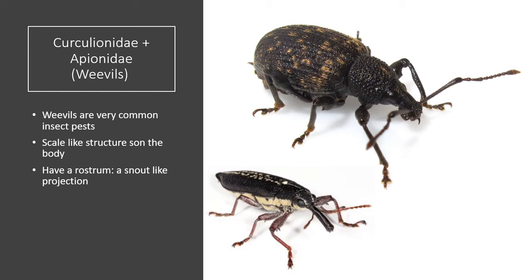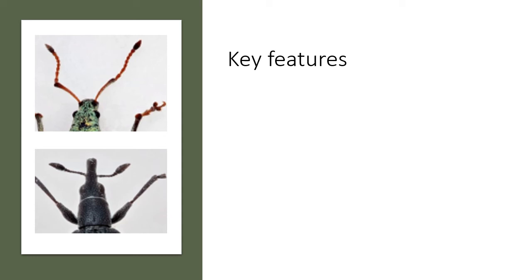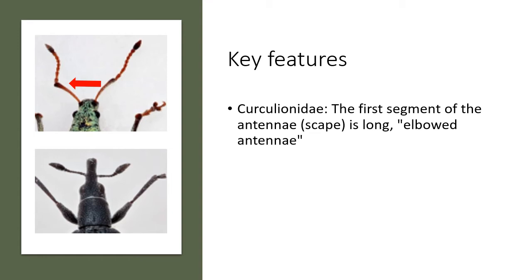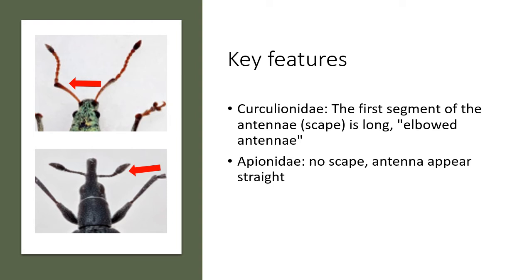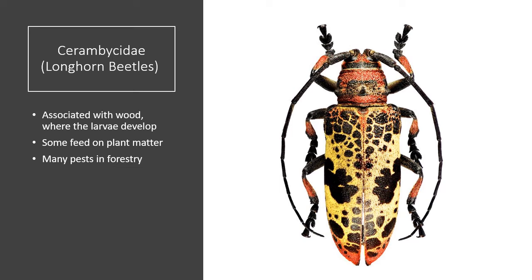This next group, the weevils, are one of my favorites due to their recognizable elongated snout. Weevils are almost entirely plant feeders, and most species are associated with a narrow range of hosts, meaning that they only eat one type of plant. They're very common insect pests in agriculture. Some key features to identify weevils include that the first segment of the antennae is long and elbowed. The Apionidae have no scape, and the antennae are often striate. There is a long rostrum in both of these families.